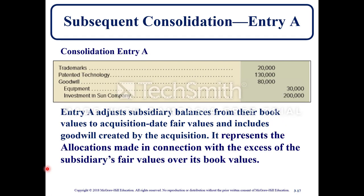For consolidation entry A: trademarks, patent technology, and goodwill are debited, and equipment and investment in Sun Company are credited. Entry A adjusts subsidiary balances from their book values to the acquisition date fair values and includes goodwill created by the acquisition. It represents the allocation made in connection with the excess of the subsidiary's fair value over its book value — making adjustments to move these accounts from book value to fair value.